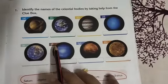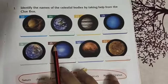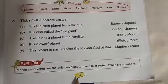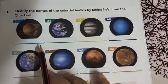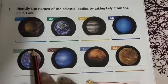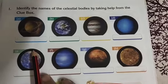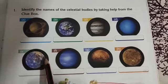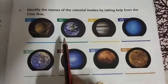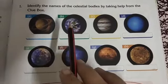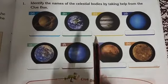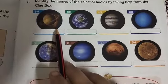Children, this is the part of chapter 32 on page number 43. In the previous video we have studied the Heavenly Creations chapter 32. In this chapter we have to identify the pictures and write the names of the pictures here. Which planet is this? We have to identify with the help of these pictures.